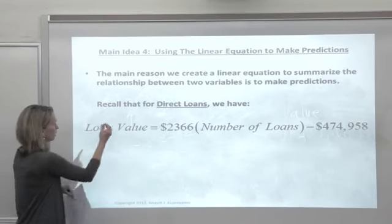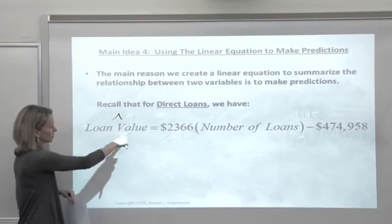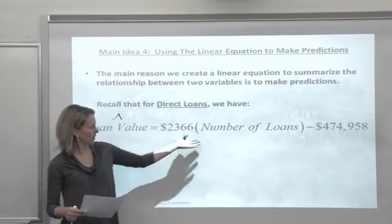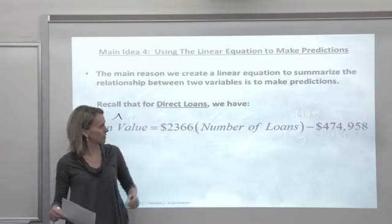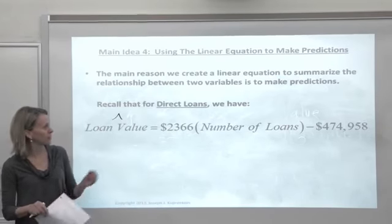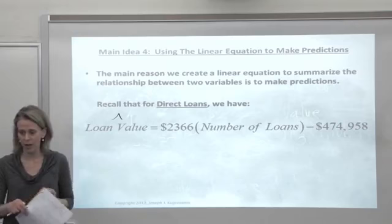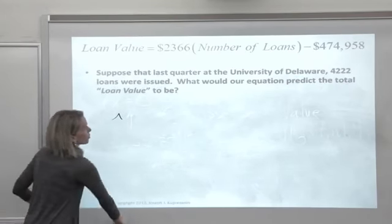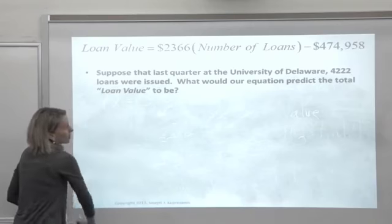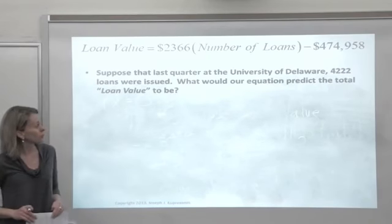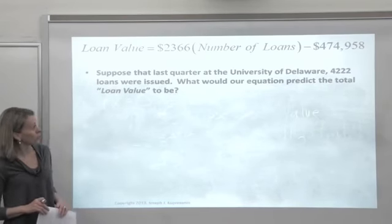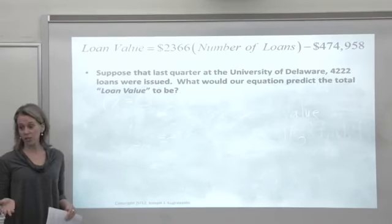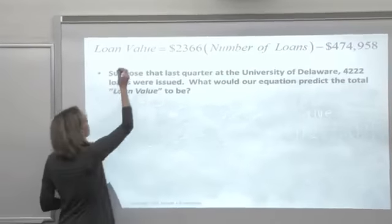Our regression line said that we predict the loan value to be 2,366 times the number of loans minus around 474,000. Let's suppose that last quarter at the University of Delaware, 4,222 loans were issued.